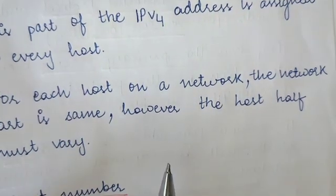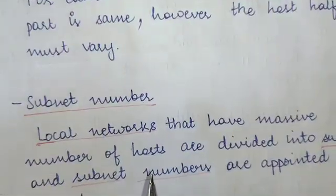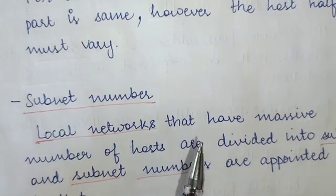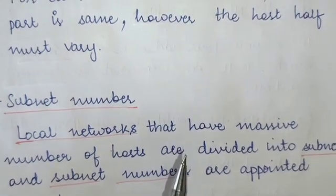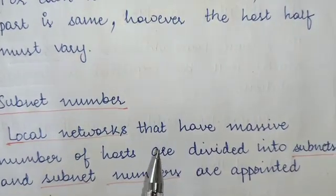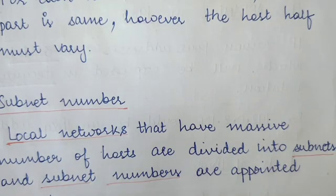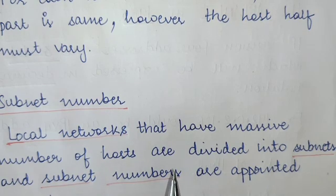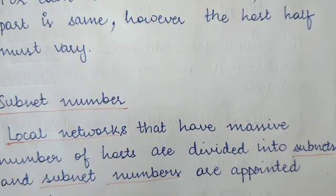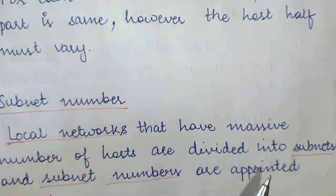The next part is the subnet number. Local networks that have a large number of hosts are divided into sub-networks, also known as subnets. Subnet numbers are then assigned to those smaller subnets within a network.